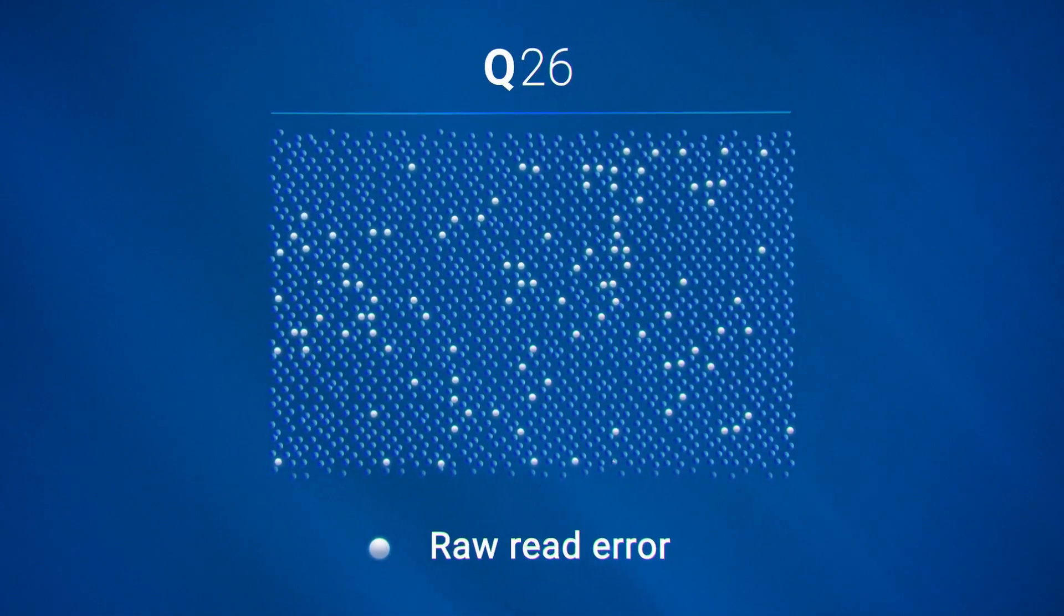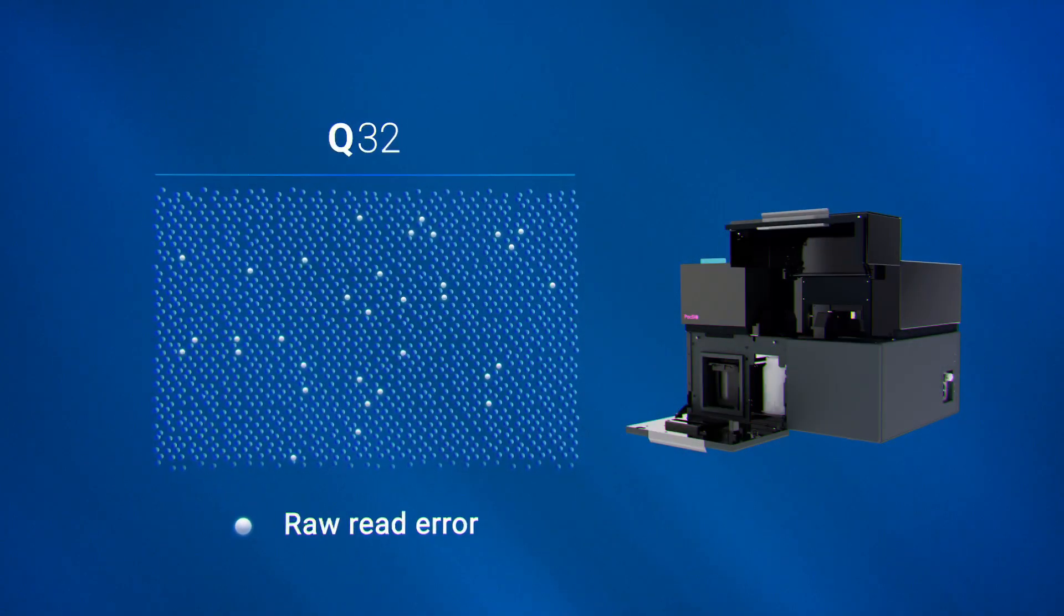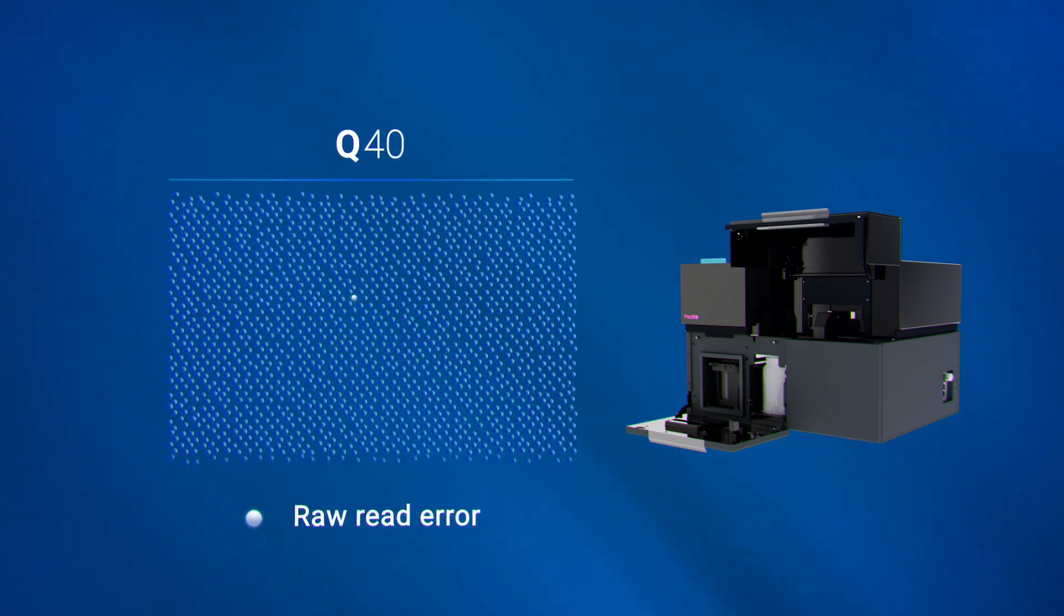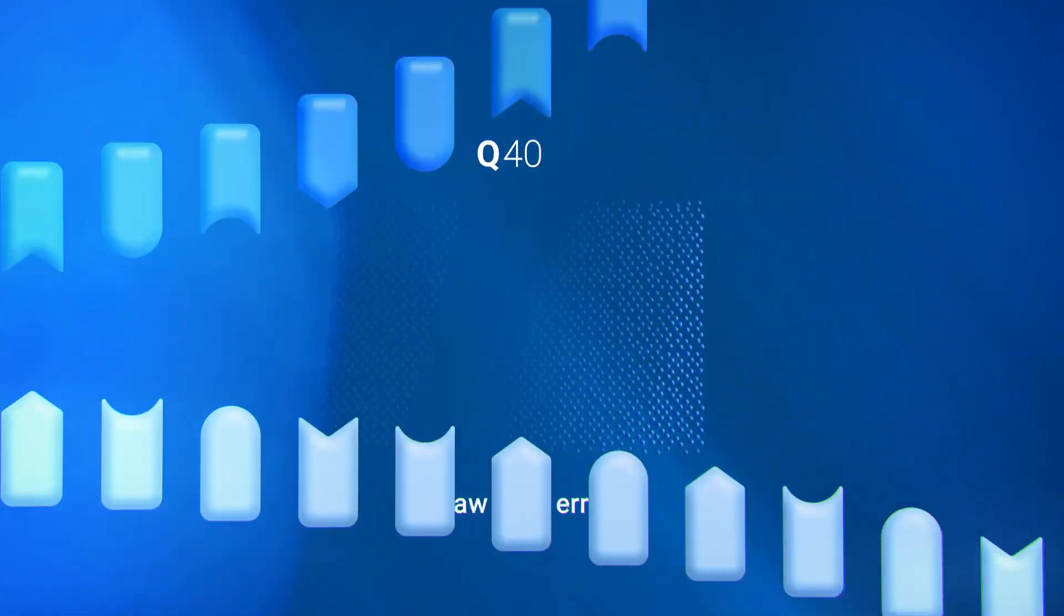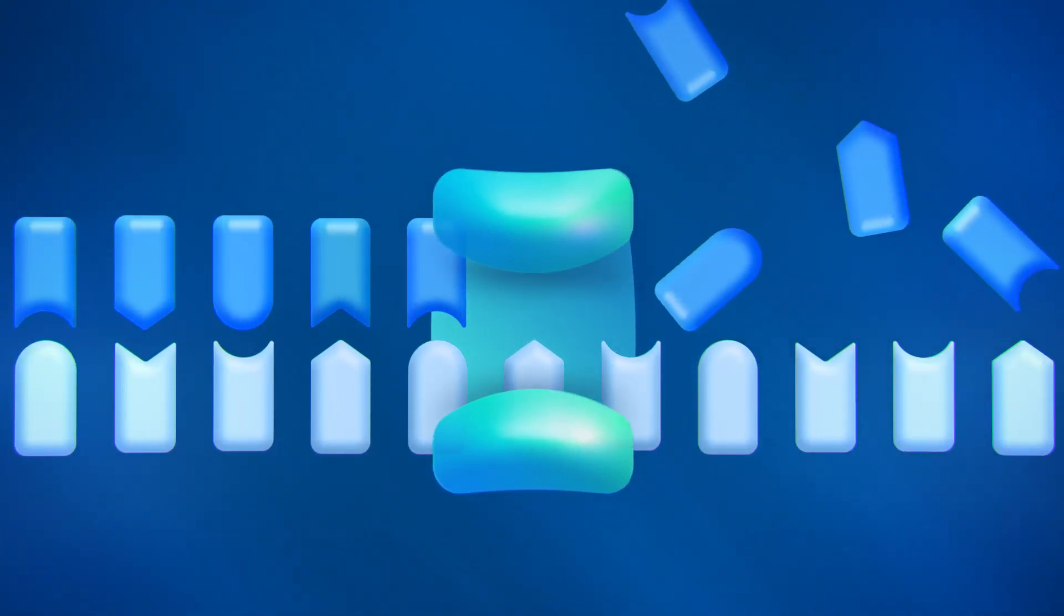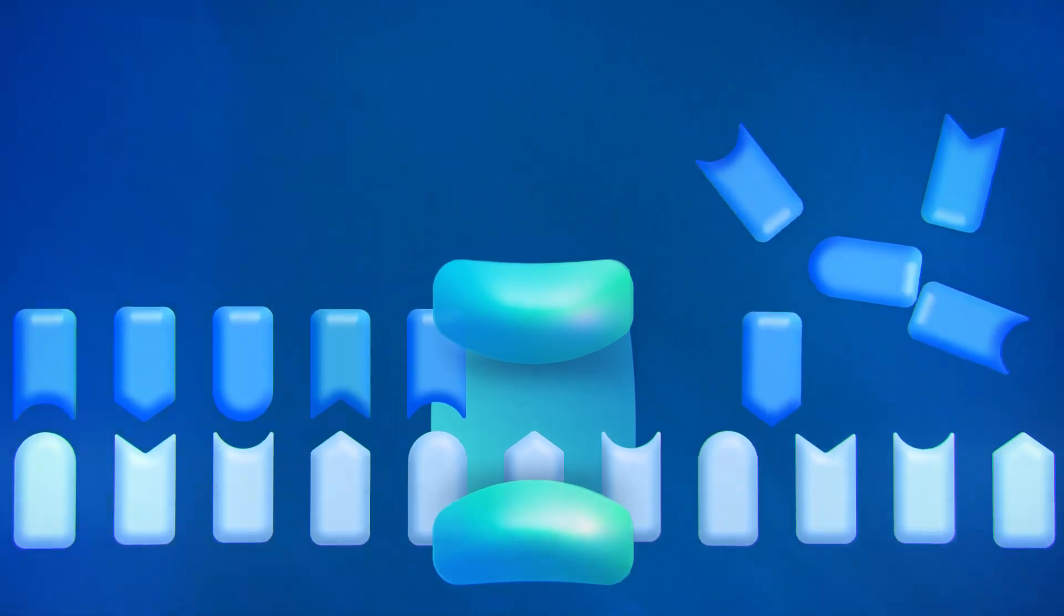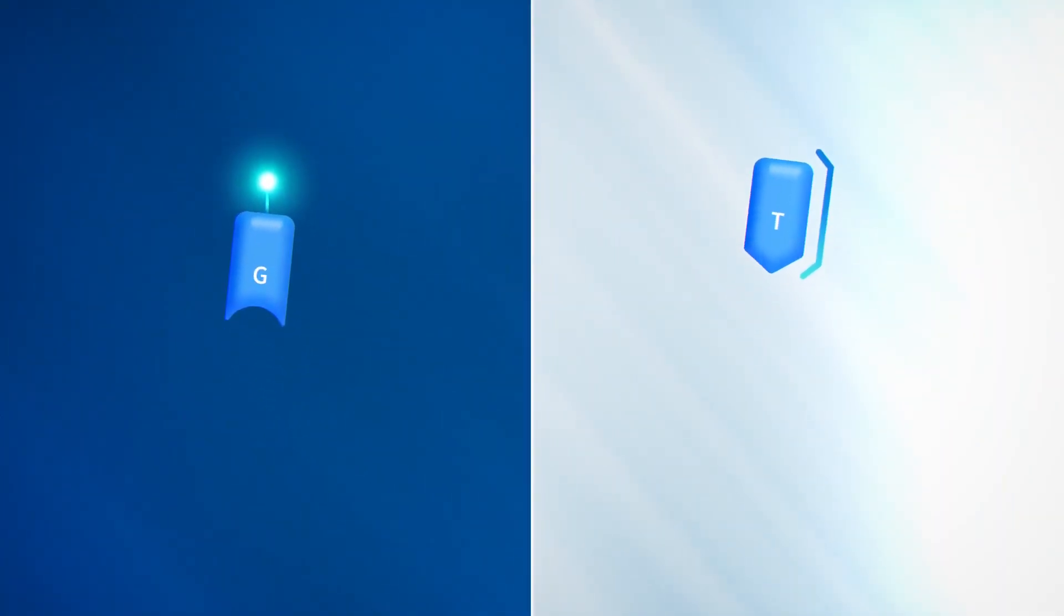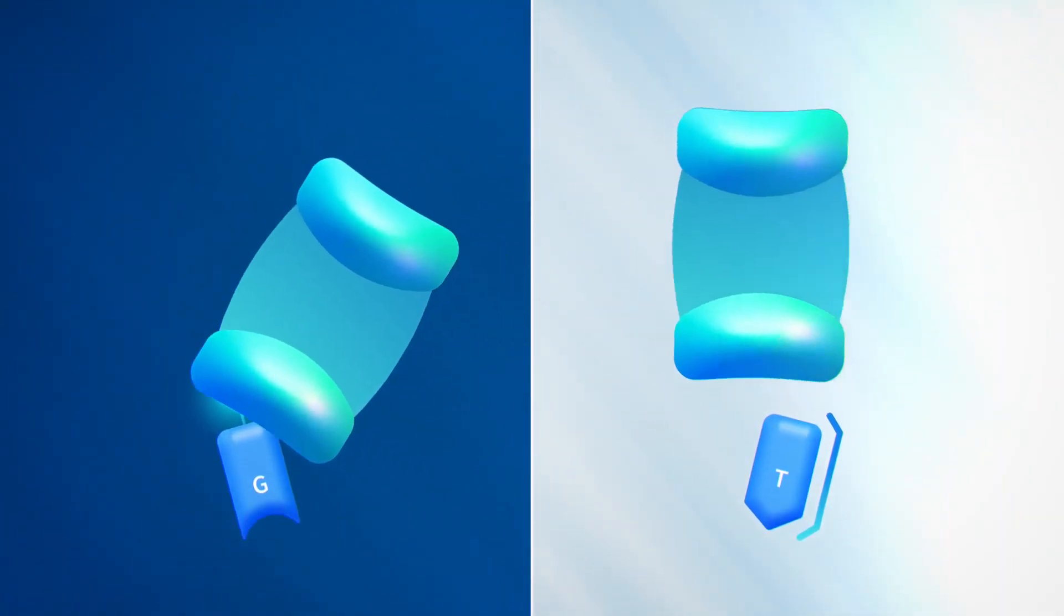A new sequencing platform eliminates raw read errors and delivers a breakthrough in sequencing accuracy. Our novel process creates truly optimized conditions for each phase of the sequencing cycle, so nucleotides only have single modifications and polymerases are selectively enhanced.